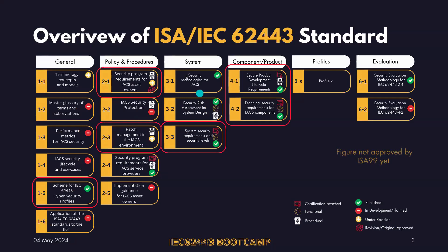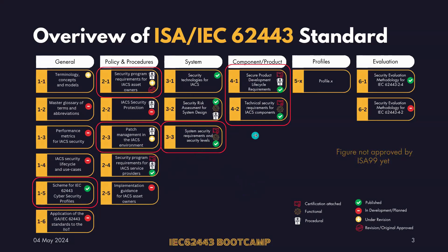Today we will focus on different parts of the standard. We'll talk about 2-1, which is the cybersecurity management system, patch management, system-level security requirements according to 3-3, component-side secure development covering 4-1 and 4-2, and on the profile side we'll also discuss 1-5. Together this covers a good chunk of the standard, though some parts such as 3-1 and 3-2 were discussed yesterday and some are still under development.